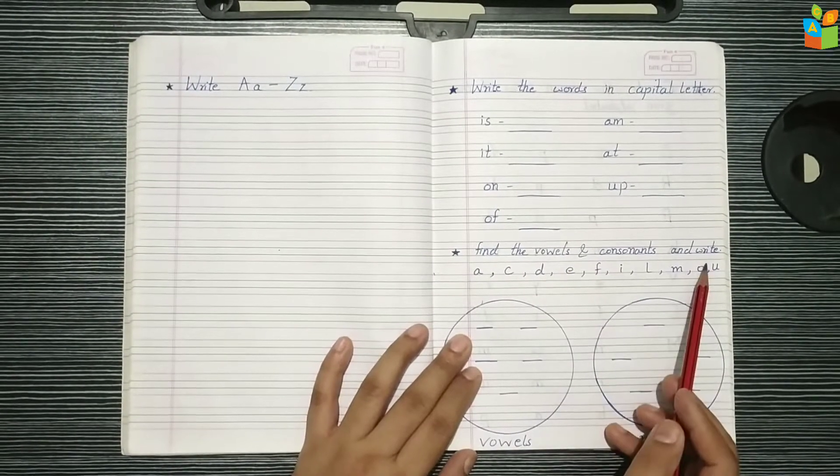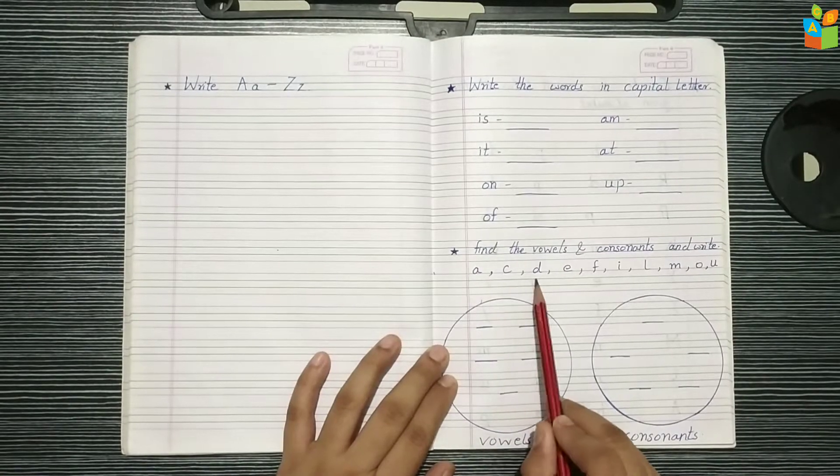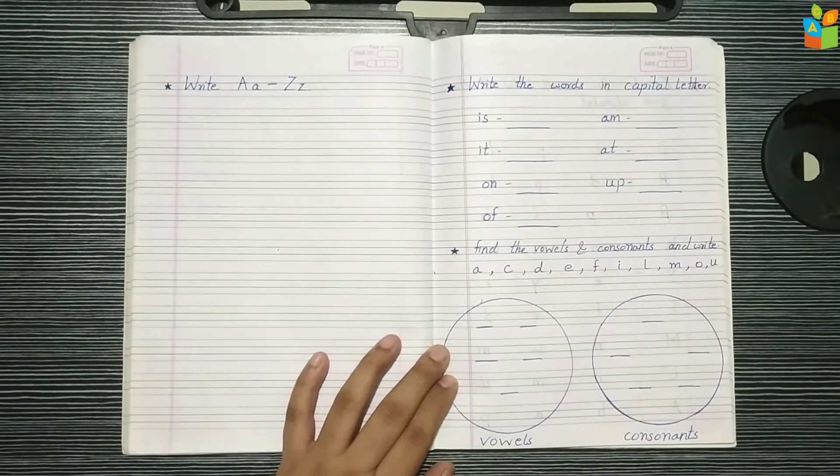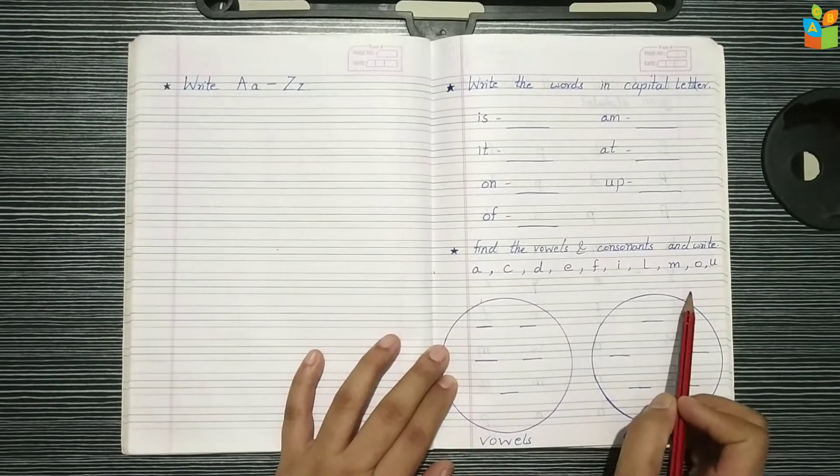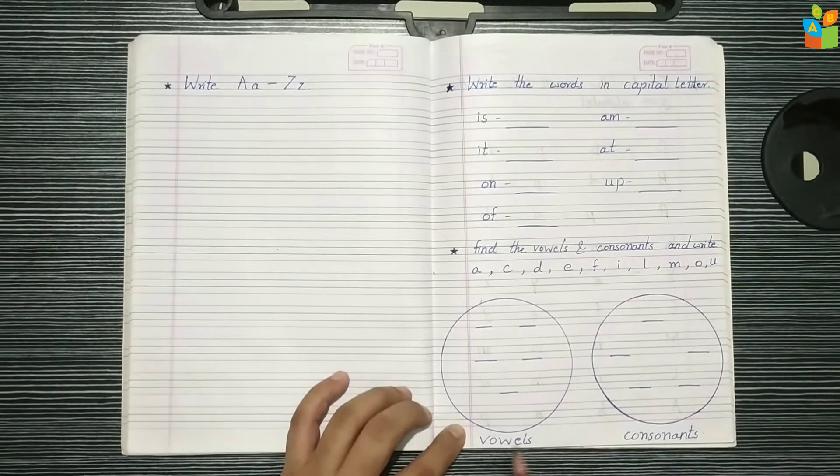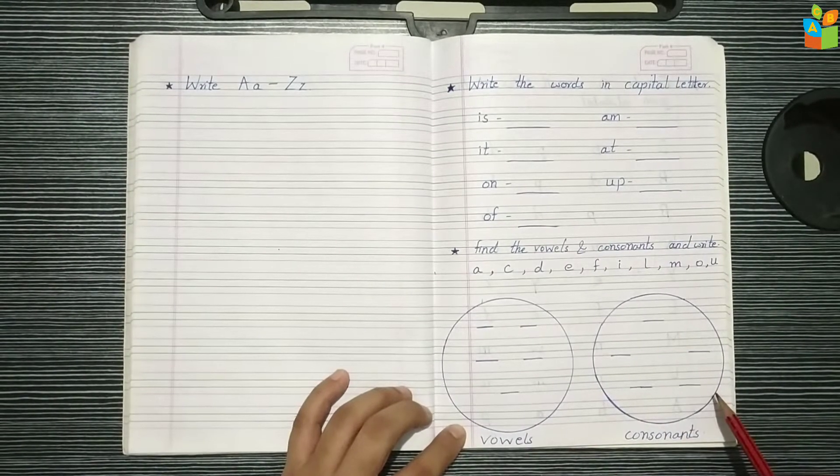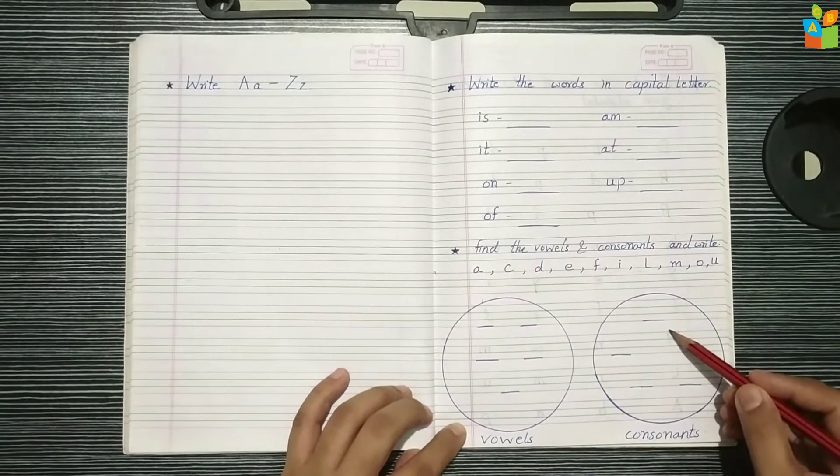Find the vowels and consonants and write. I have written some alphabets here. What does the child have to do with the consonants and vowels? They have to understand and write both. If you have made a circle, you have to write the vowels here and consonants in this circle.